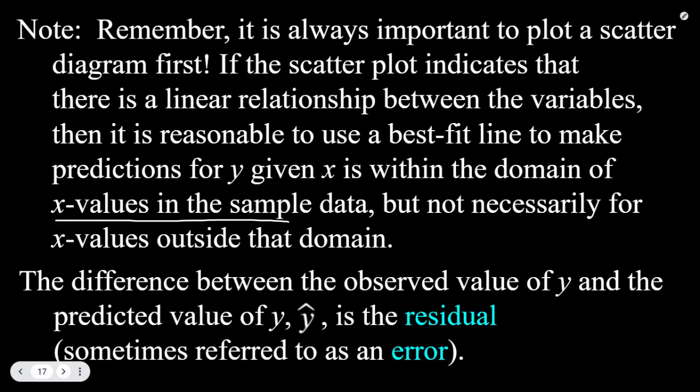The difference between the observed value of y and the predicted value ŷ is called the residual, sometimes referred to as an error. It is the difference between the y value that was predicted and the y value that was actually observed. If everything lined up perfectly on a line, residuals would always be zero, but in most cases there will be some variation.